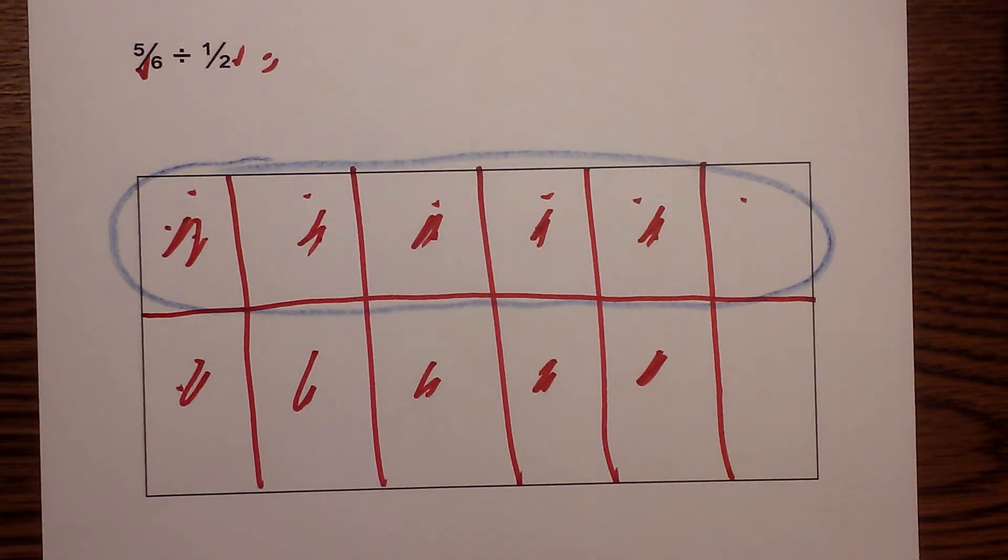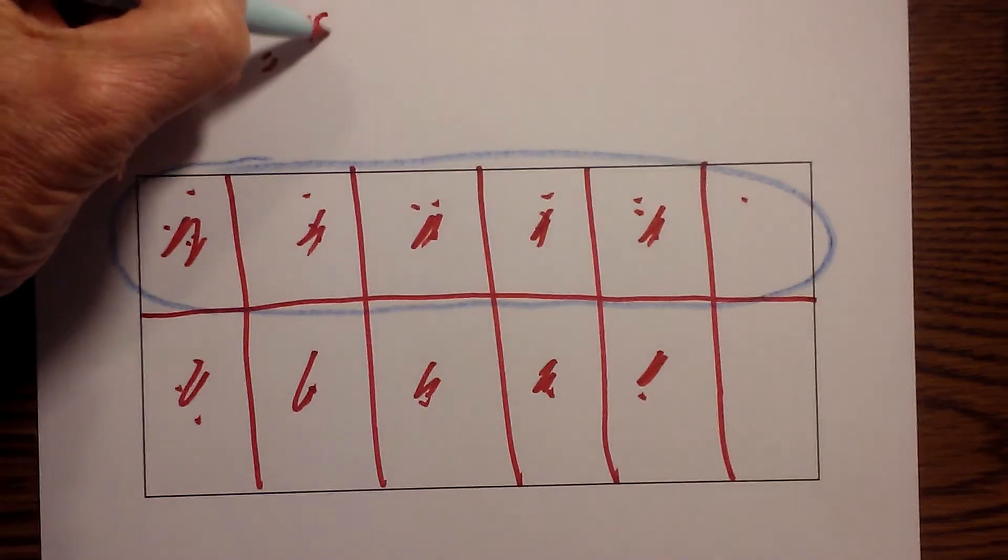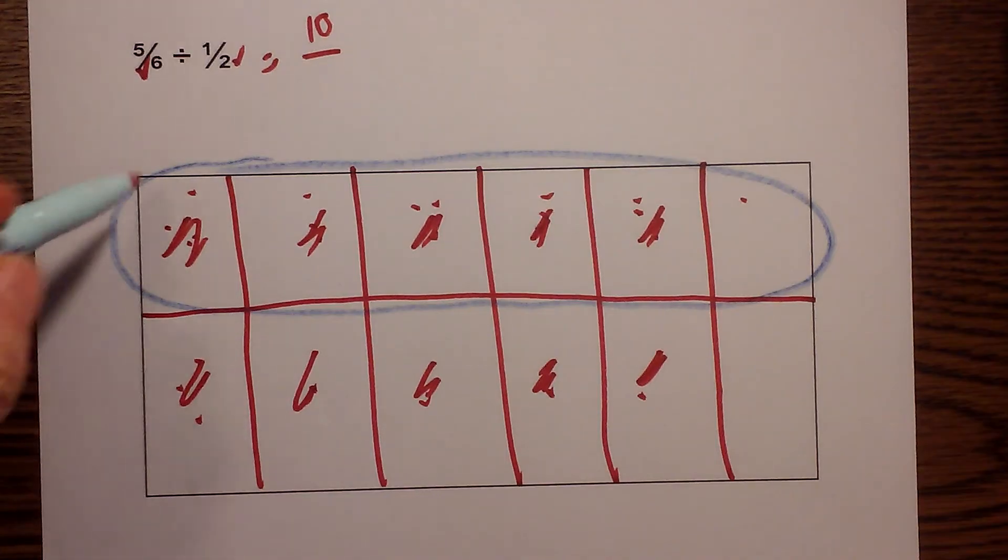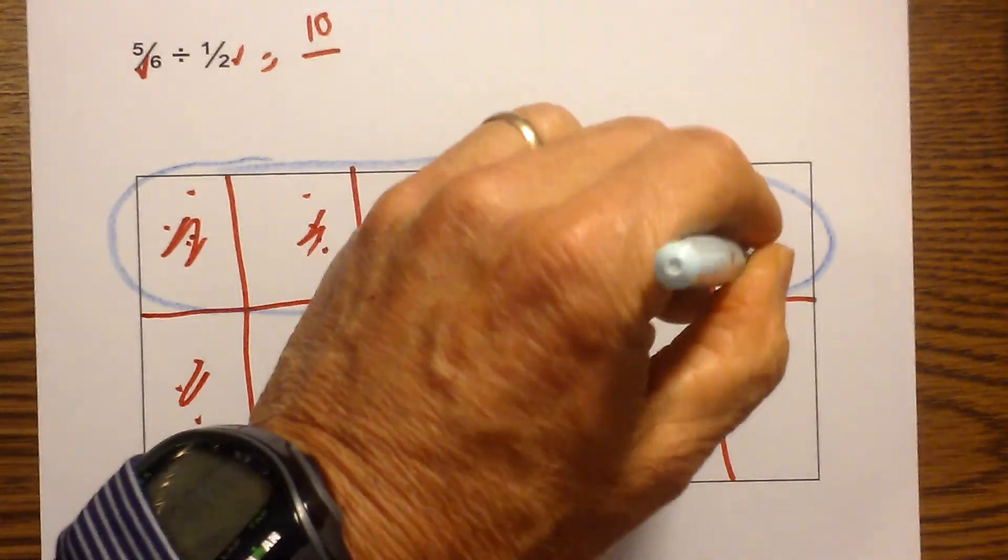And now I start counting. So now for the numerator I have 1, 2, 3, 4, 5, 6, 7, 8, 9, 10. And now for the denominator I have 1, 2, 3, 4, 5, 6.